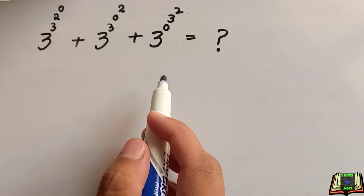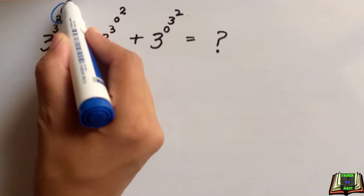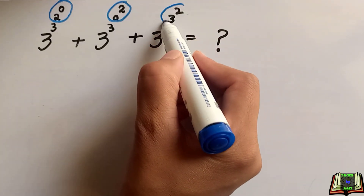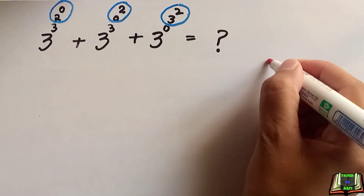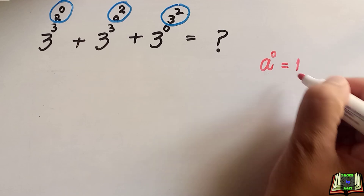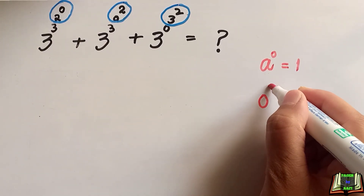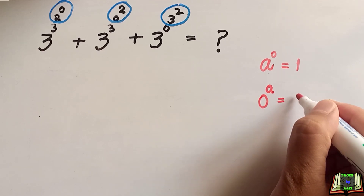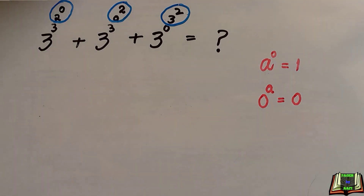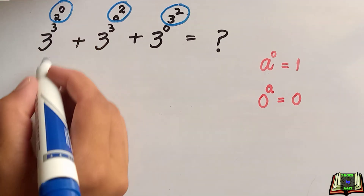Whenever we are solving nested parentheses, we start from the innermost parentheses. Keep one thing in mind: when any number is raised to the power 0, that is equal to 1. And when 0 is raised to the power of any number a, that is equal to 0. Keeping this in mind, we are going to solve the innermost parentheses first.